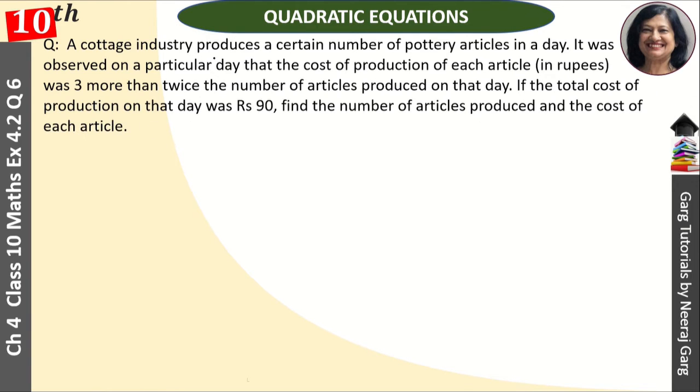A cottage industry produces a certain number of pottery articles in a day. It was observed on a particular day that the cost of production of each article in rupees was 3 more than twice the number of articles produced on that day. If the total cost of production on that day was Rs. 90, find the number of articles produced and cost of each article.